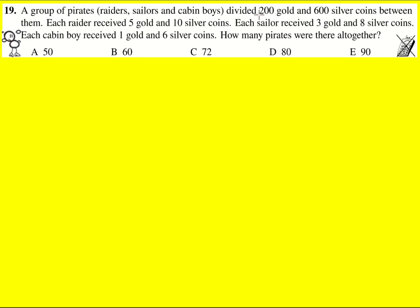Lots of information in this question. Let's first of all focus on the number of gold coins. So we can see that the total number of gold coins is going to be the total number received by the raiders plus the total number received by the sailors plus the total number received by the cabin boys.